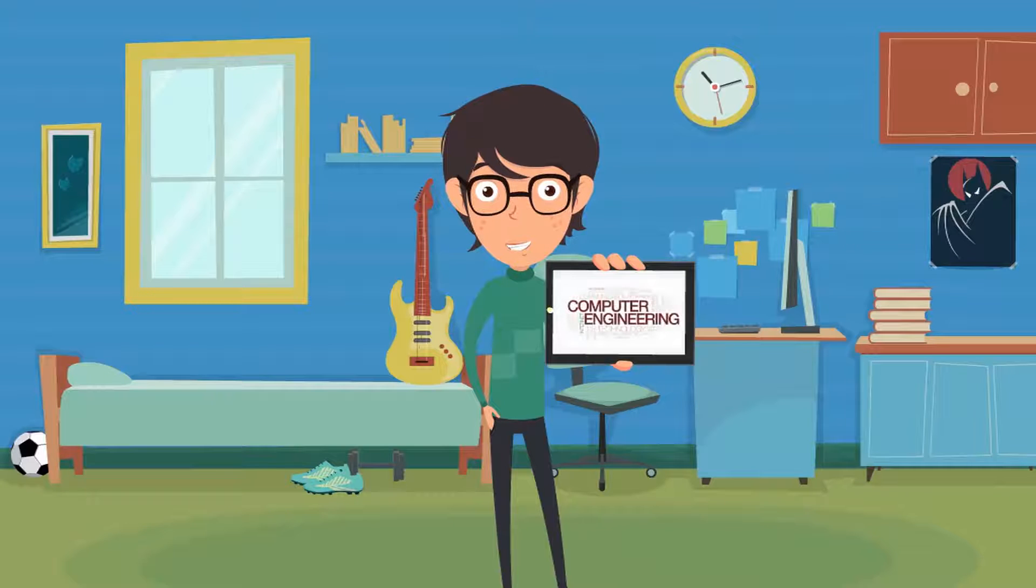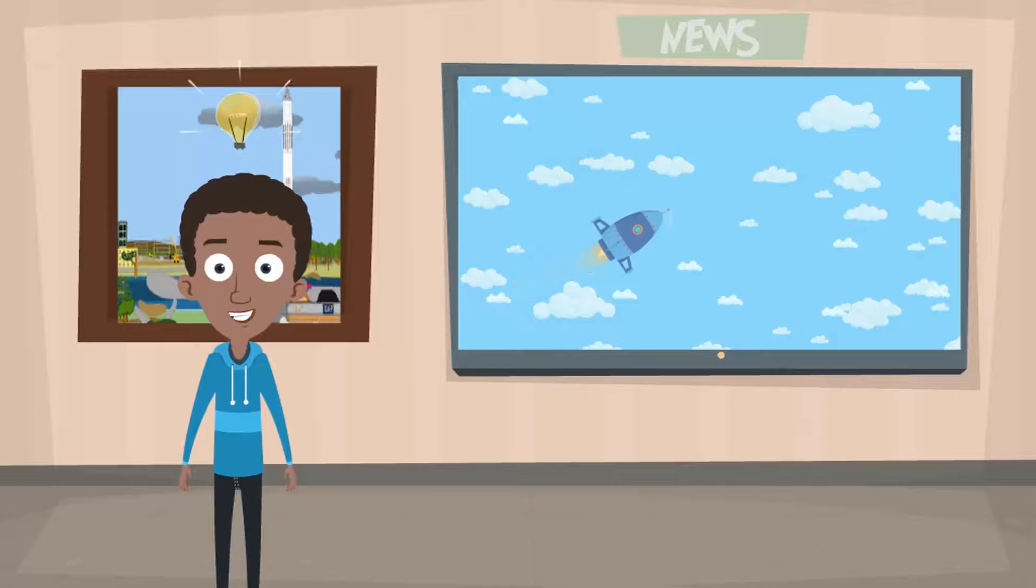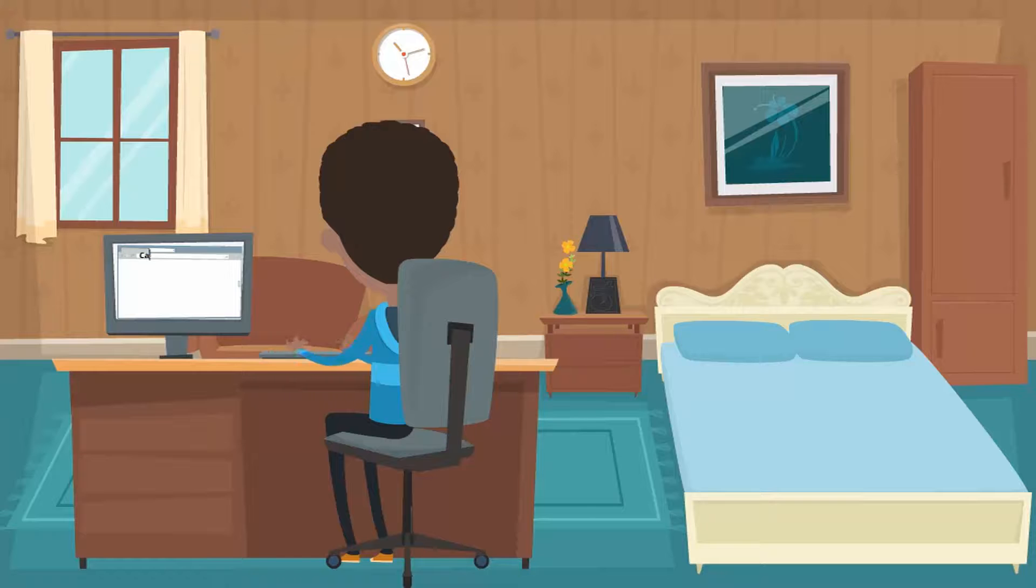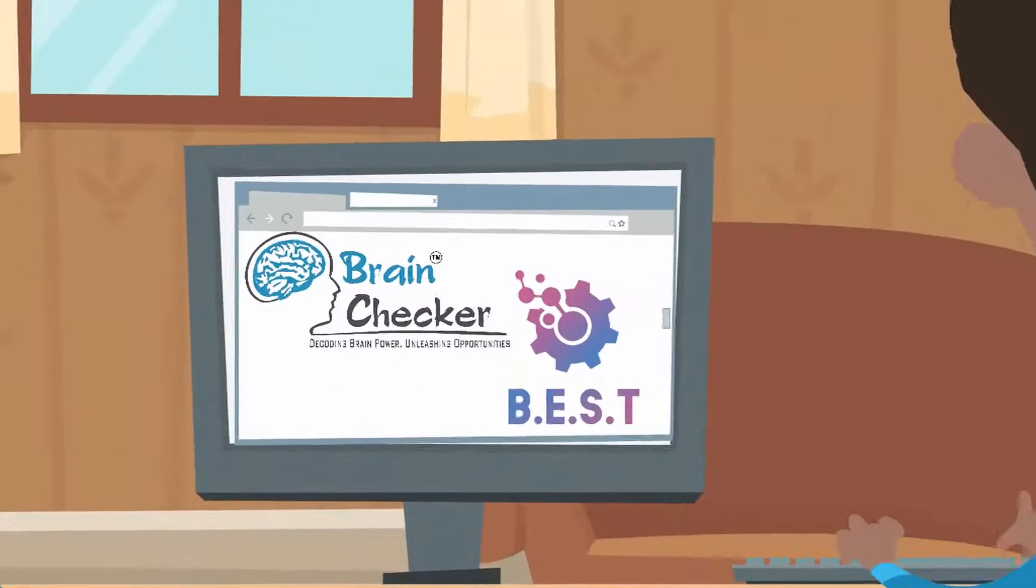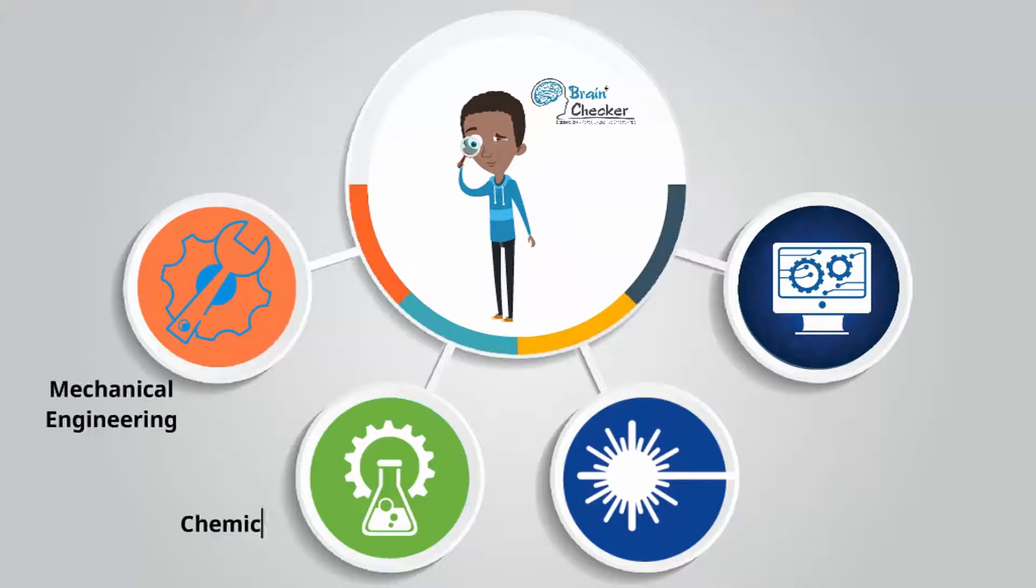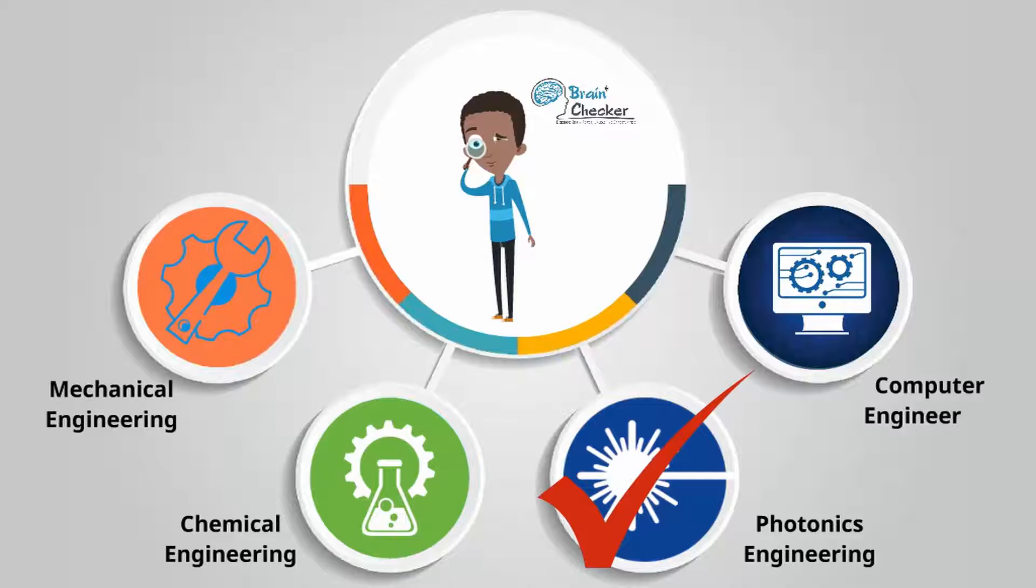Rahul was certain that he wanted to become a computer engineer. Sameer on the other hand was interested in aerospace engineering but wanted an expert's opinion. Researching online, Sameer came across Brain Checker engineering sorter test and decided to choose his specialization after consulting Brain Checker.